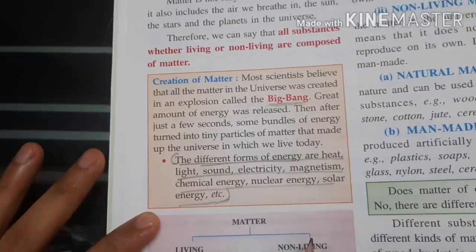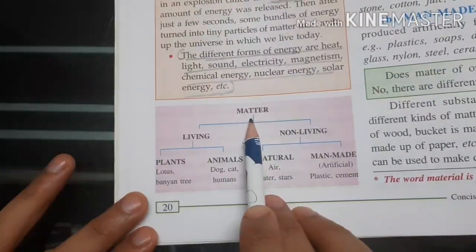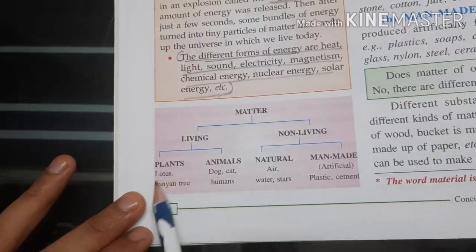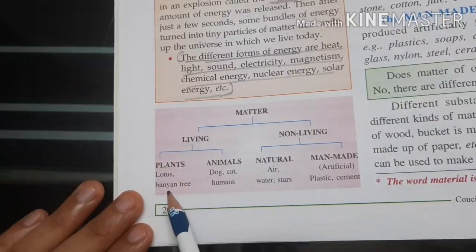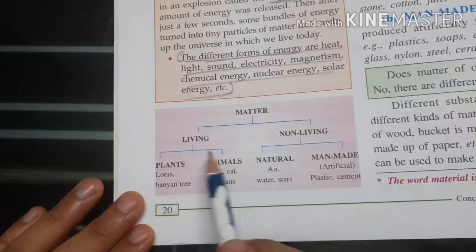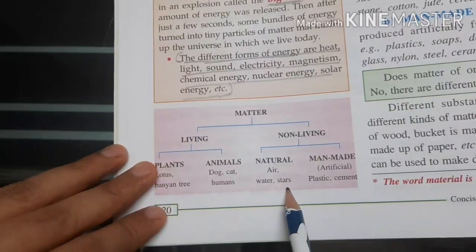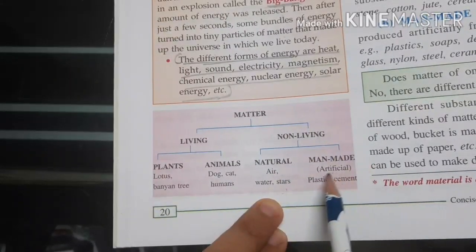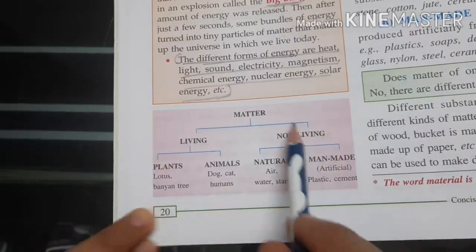Now you know about matter. If we classify matter, then matter is classified into living things and non-living things. Non-living things can be natural — like air, water, rocks, stars — or man-made artificial things like plastic and bricks. These are the classifications of matter.